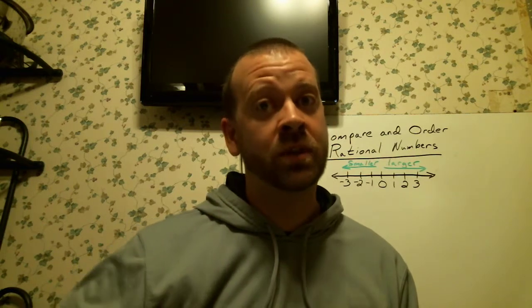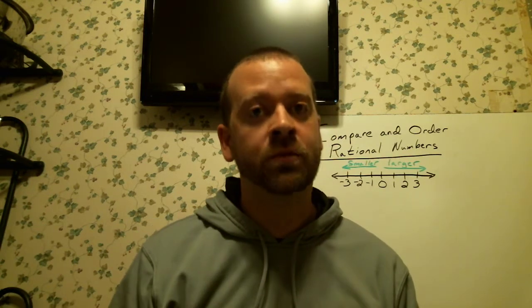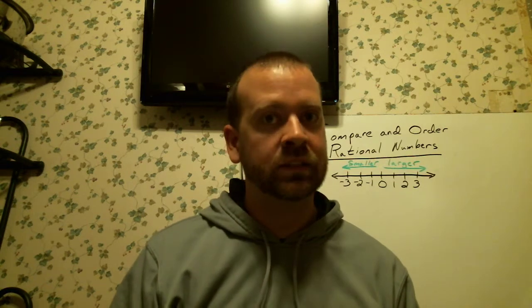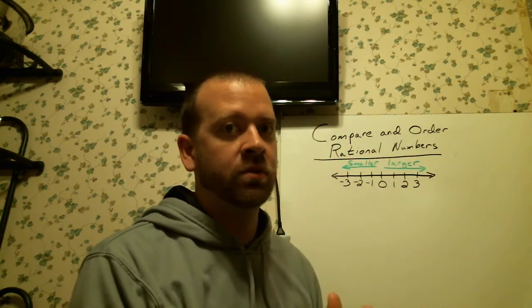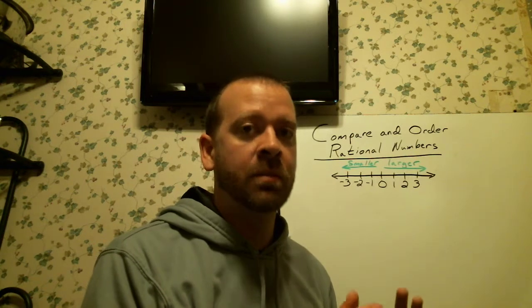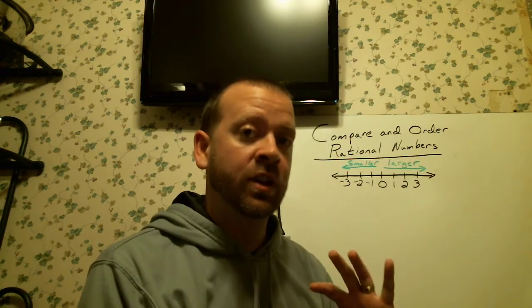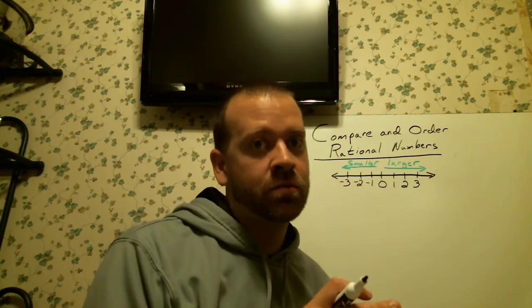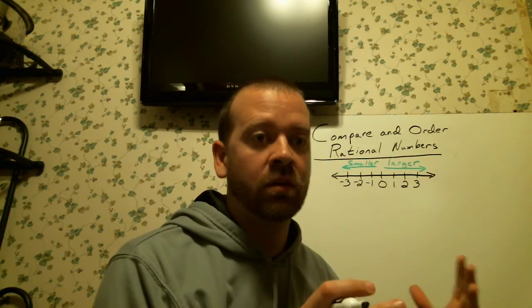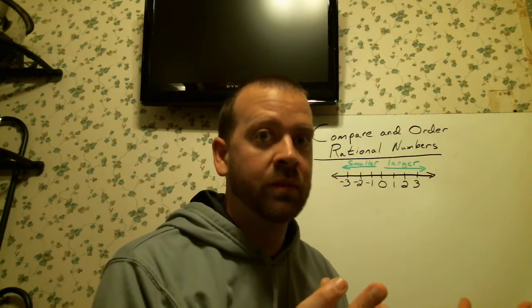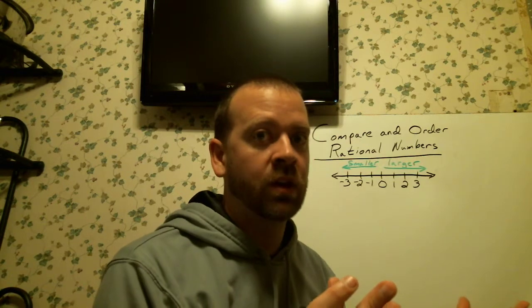Now remember, rational numbers include positive and negatives — they're integers, and integers are whole numbers — but rational numbers are also decimals and fractions. So now we can compare those, but it's not always going to be comparing a fraction with a fraction or a decimal with a decimal. Sometimes it gets mixed up, and we've got to figure out how to do that. I'll show you a good example.